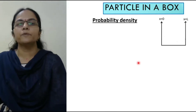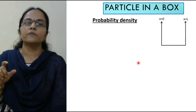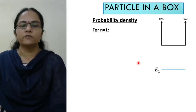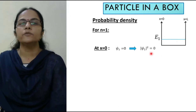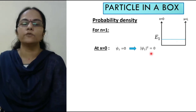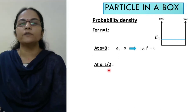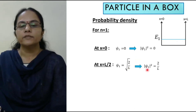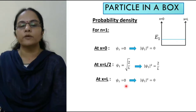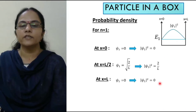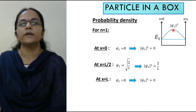Now we calculate the probability density, which is the square of the modulus of the wave function. For n equals 1 at energy E1: at x equals 0, ψ1 equals 0, so |ψ1|² equals 0. At x equals L/2, ψ1 equals square root of 2 by L, so |ψ1|² equals 2 by L. At x equals L, ψ1 equals 0, so |ψ1|² equals 0. The maximum probability density is 2 by L at the center.